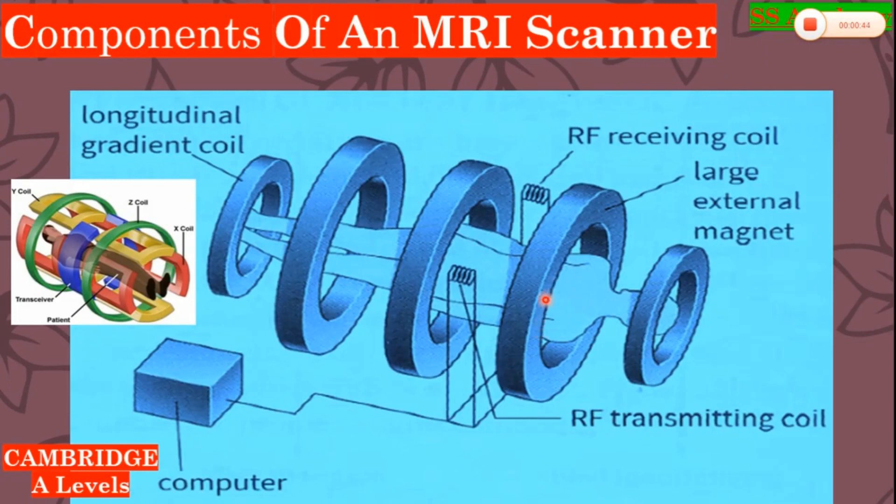This is a superconducting permanent magnet. These are RF coils, RF receiving coil and RF transmitting coil. The computer controls data acquisition, image reconstruction, and image storage. In the next slides, you will learn the function of each part separately in further detail.